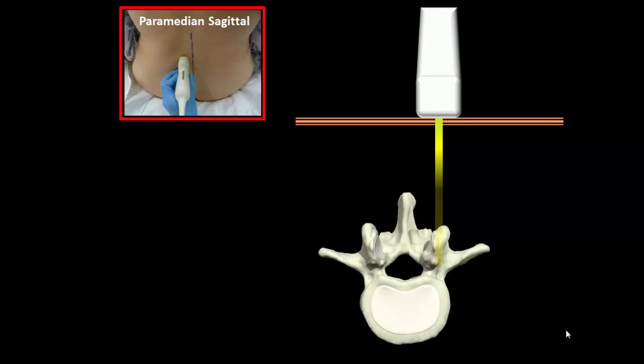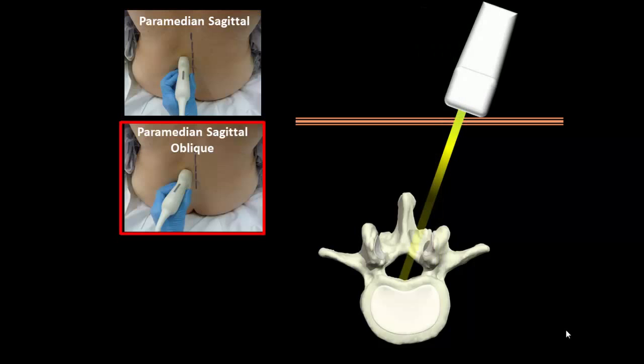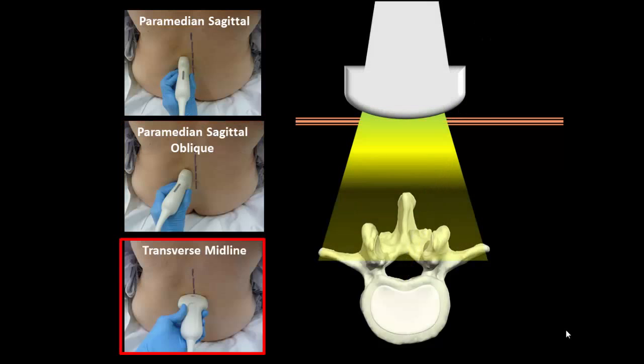There are three common probe orientations used in ultrasound scanning of the spine. These are the paramedian sagittal view, in which the probe is placed in a longitudinal orientation perpendicular to the patient's back. Next, the paramedian sagittal oblique view, in which the probe is angled towards the midline to penetrate the lateral interlaminar space. And finally, the transverse midline, in which the probe is placed in a transverse orientation across the midline of the neuraxis.